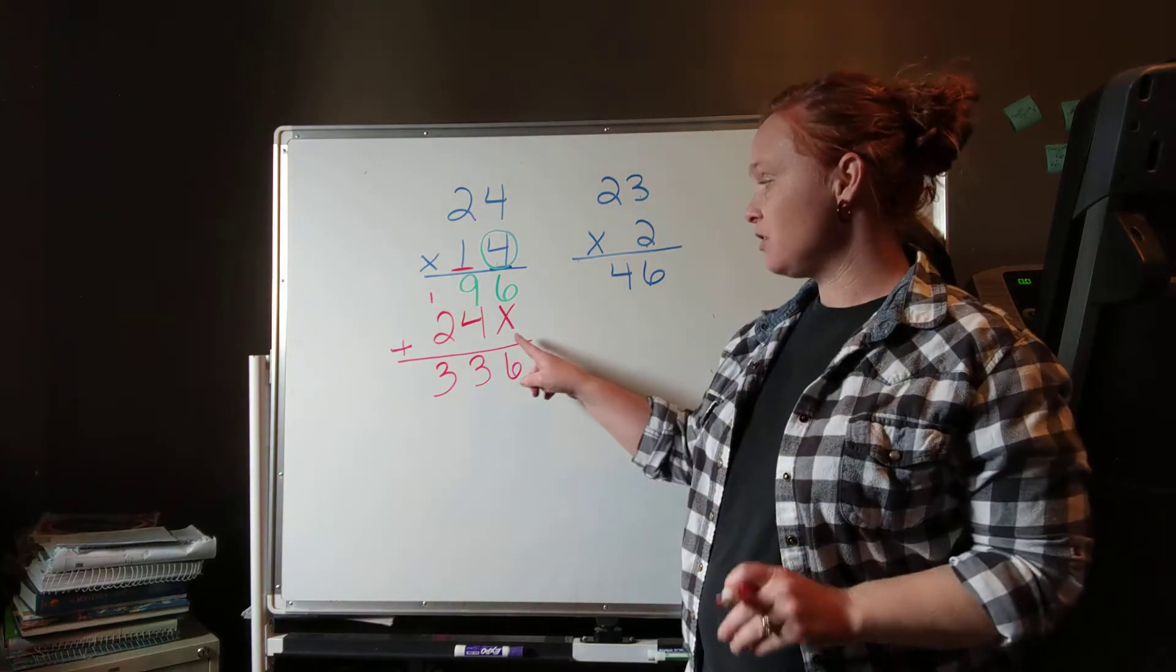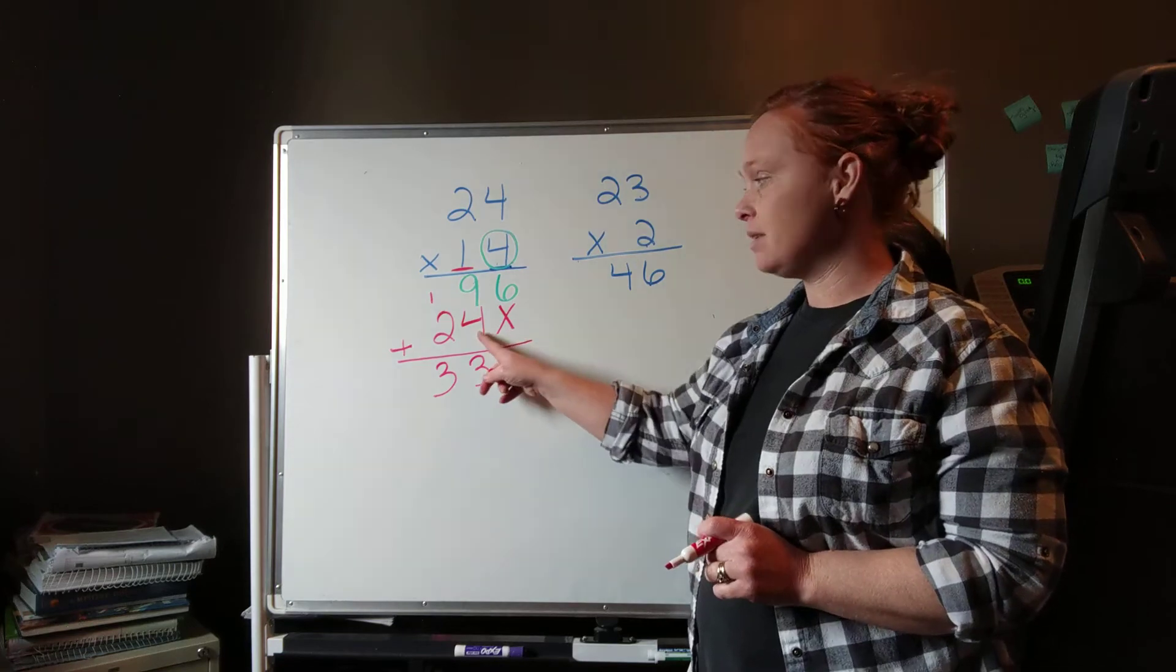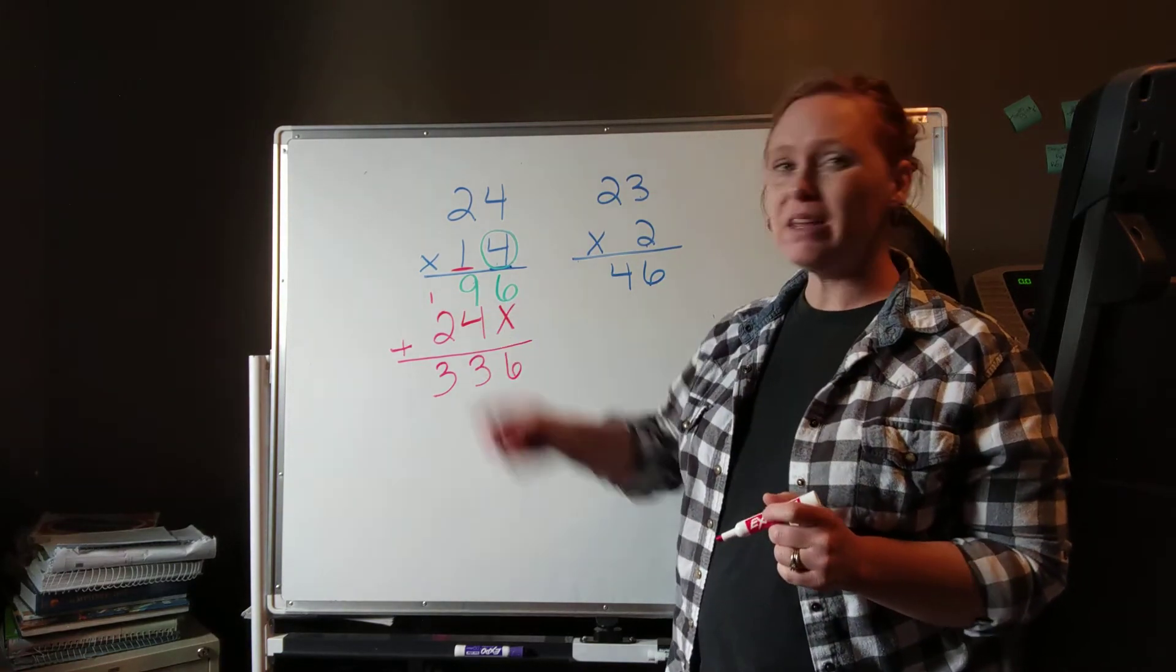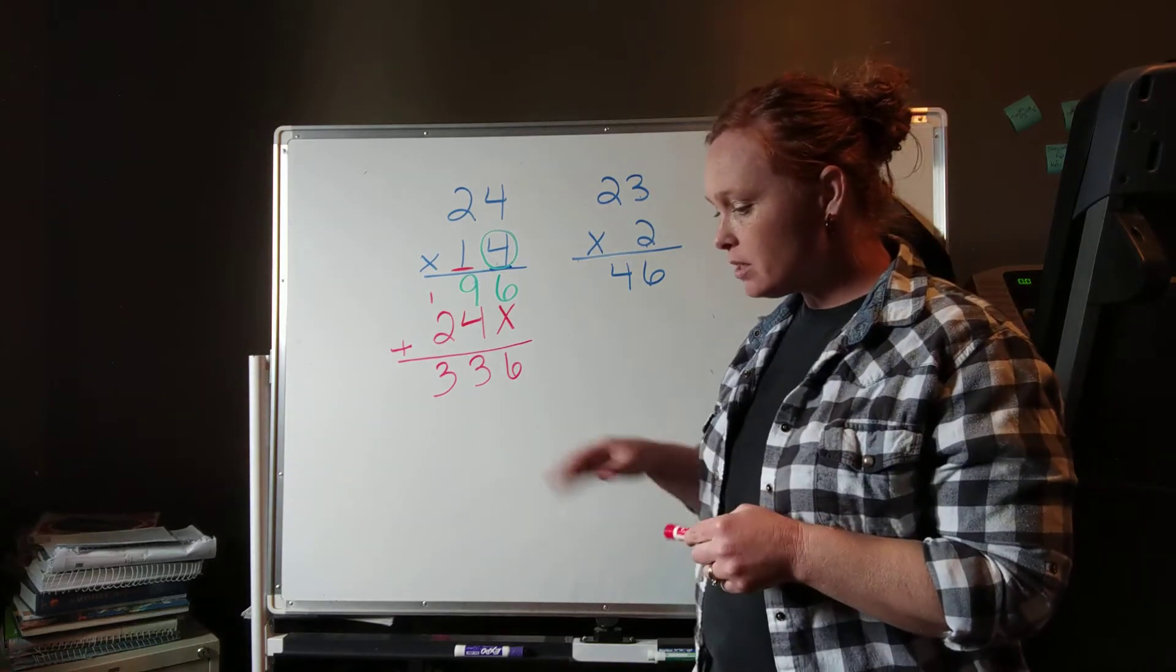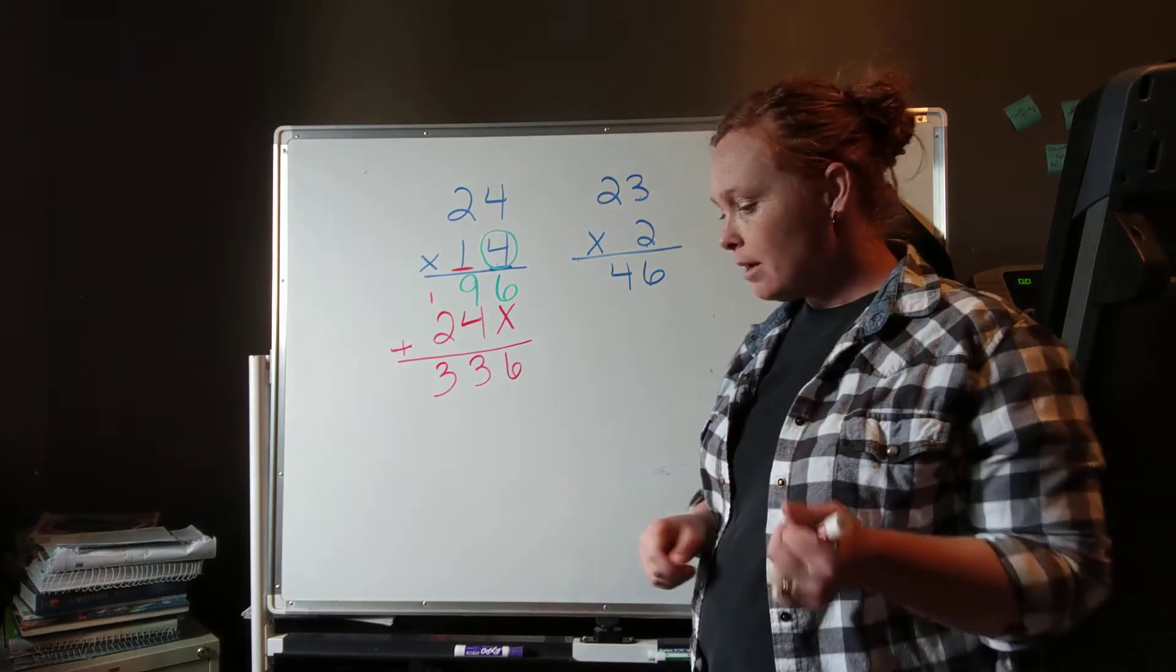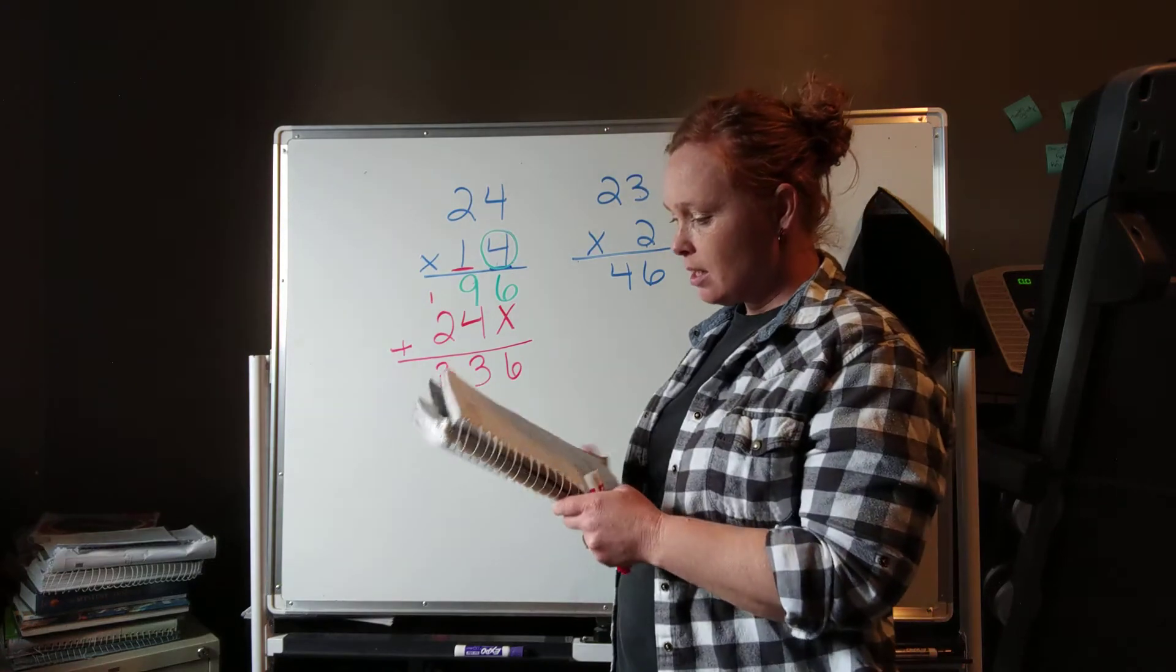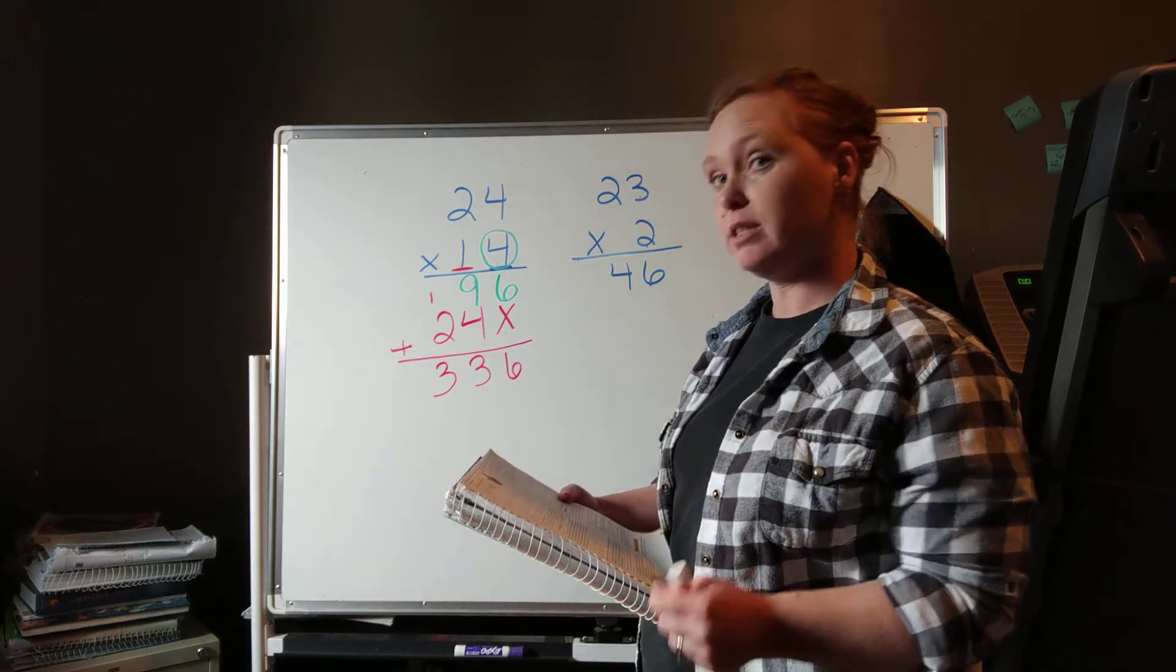Now make sure that you're taking the time to mark out your ones place, because if you don't what happens? This 4 might get scooted over and then we mis-add and we get the whole thing wrong. So this is what you're going to be working on today. In your directions, if you'll see, it talks about doing some estimating, but we're not going to do that. We're just going to be doing multiplying.